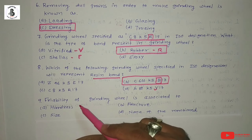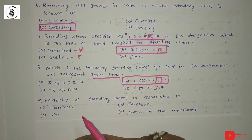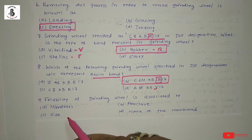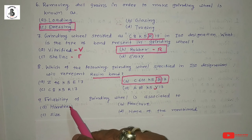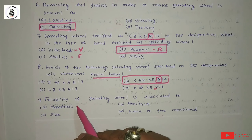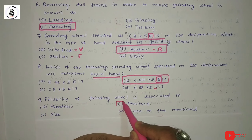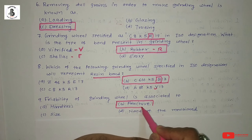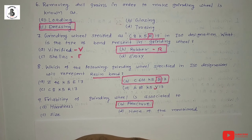Question 9: Friability of a grinding wheel is associated with: Option A: hardness, Option B: fracture, Option C: size, Option D: none of the above. Friability is related to the fracture characteristic of the grinding wheel, so the answer is option B: fracture.